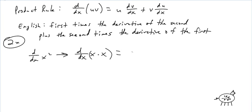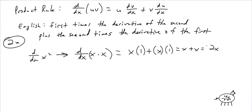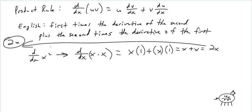So it's the first, which is x, times the derivative of the second, which is one, plus the second, which is x, times the derivative of the first, which is one. So you have x plus x — it's 2x!